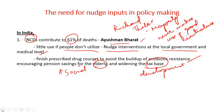India has been experiencing a myriad of policy problems. These problems can be answered by understanding the existing situation prevailing in the country, for which behavioral aspects are an important point of study. The nudge units proposed by NITI Aayog will be a move in the right direction to improve the efficiency of policy making in India.